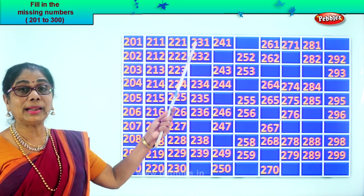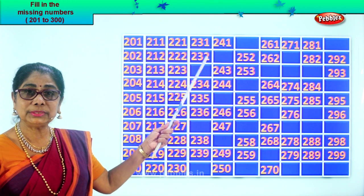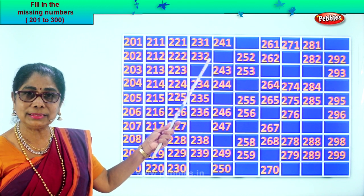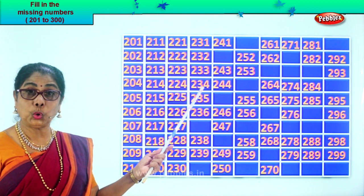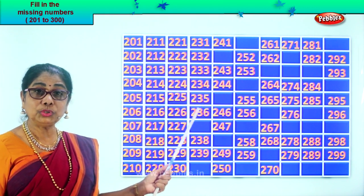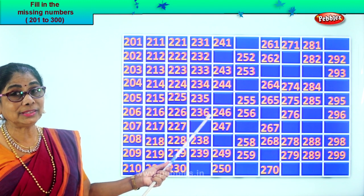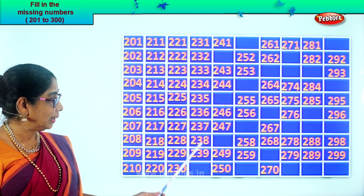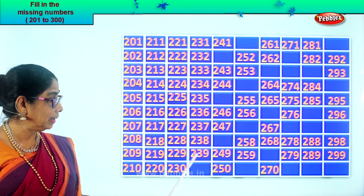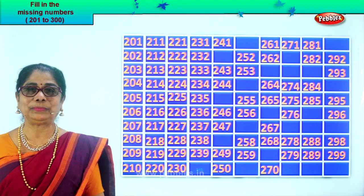Next: two hundred and thirty-one. Two hundred and thirty-two. After thirty-two — thirty-three. Two hundred and thirty-three. Two hundred and thirty-four. Two hundred and thirty-five. Two hundred and thirty-six. After thirty-six — thirty-seven. Two hundred and thirty-seven. Two hundred and thirty-eight. Two hundred and thirty-nine. After thirty-nine — forty. Two hundred and forty. Good.